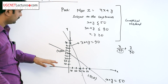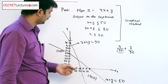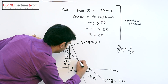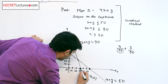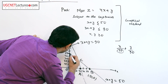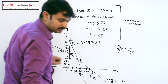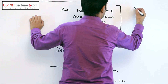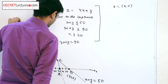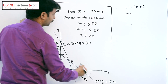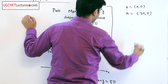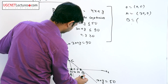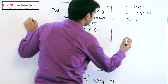We are plotting these two equations and labeling the key coordinates. Point O is the origin (0, 0). Point A is on the x-axis at (30, 0), and point B is at (50, 0).